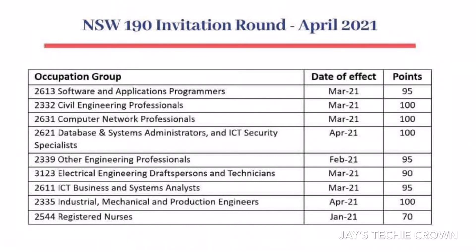Mechanical and production engineers who applied in the month of April with 100 points, and registered nurses who applied as of January 2021 with 70 points, were invited. This is the recent invite timeline as of April 2021 for NSW. For the software engineering category, 95 points are required; for civil engineering, 100 points; and for registered nurses, 70 points are required to receive a 190 invite.